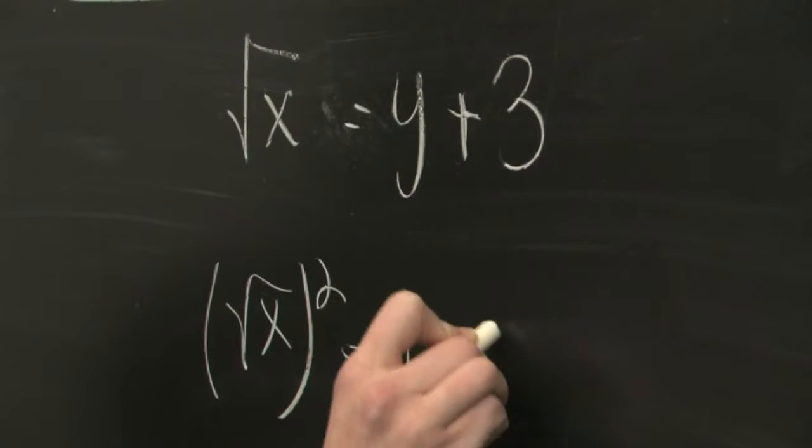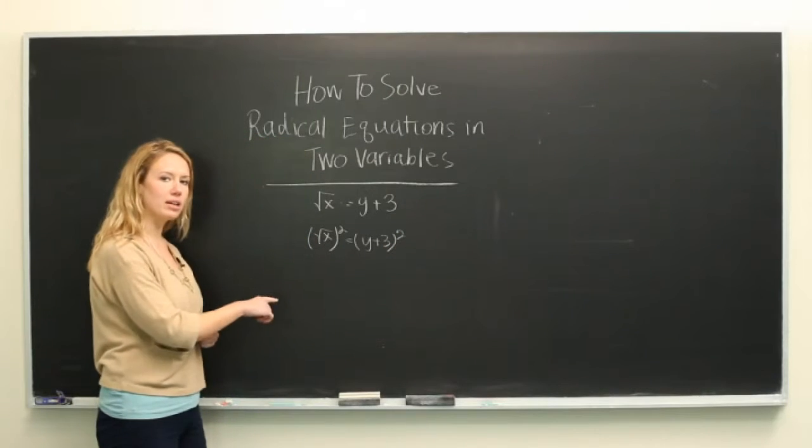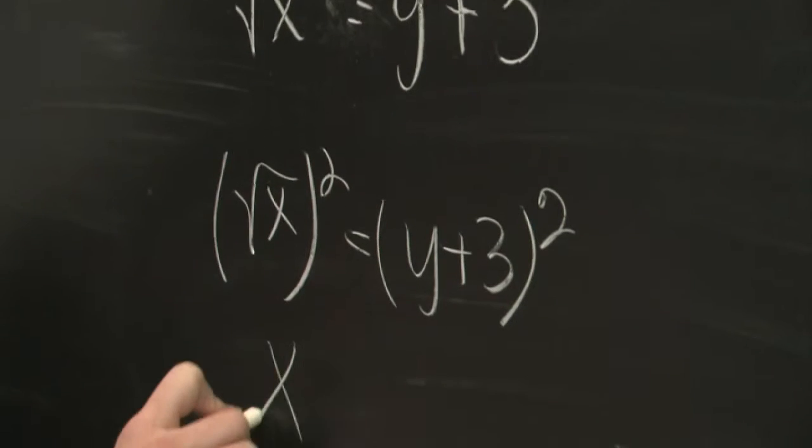So we have to square the right hand side. The square root of x squared is just going to give us x,